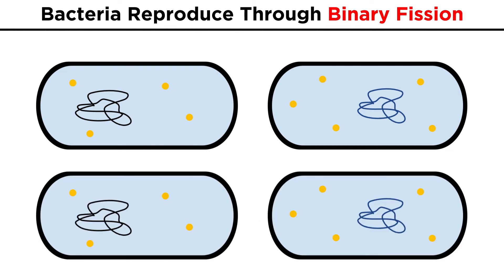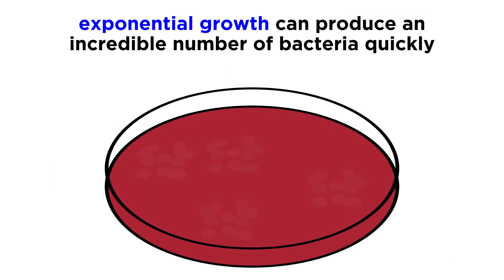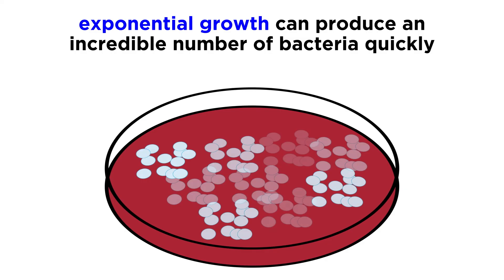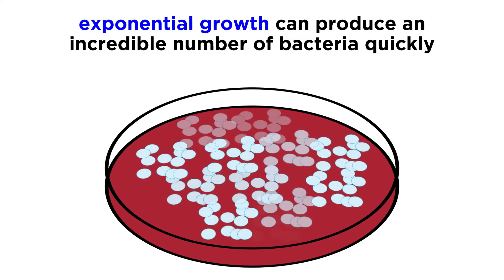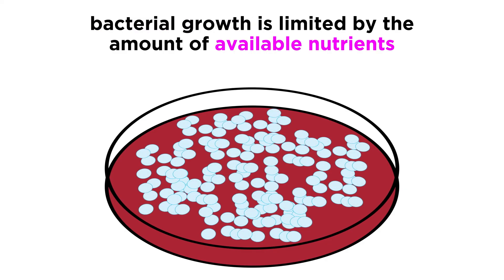These two become four, then eight, and so on in exponential fashion, with each division usually taking just a couple of hours or less. If there were no factors limiting this process, their numbers would grow to staggering levels. But there are indeed limits to any bacterial population, since each organism needs a certain amount of nutrients.